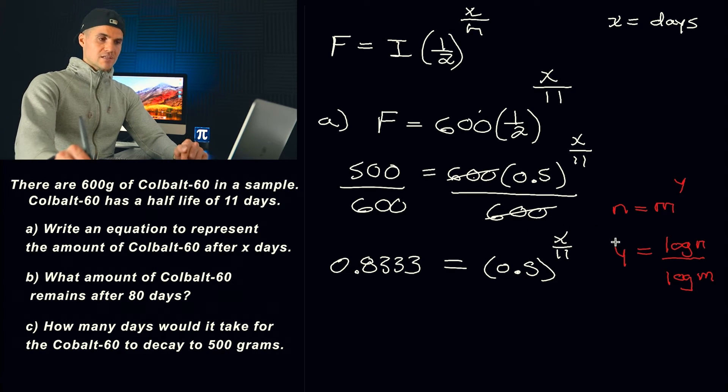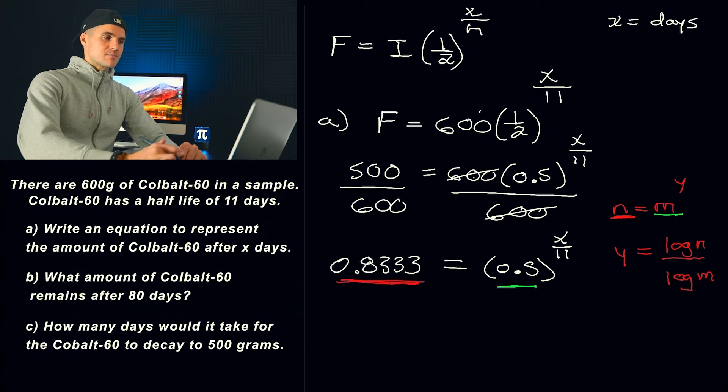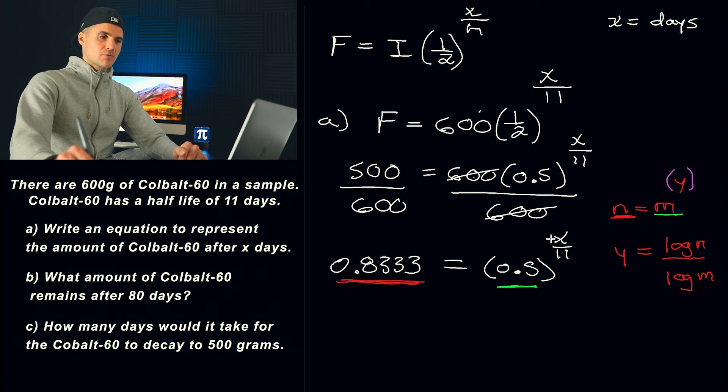Now, in this particular case, if we were to use this, notice that the n is the 0.8333. And then the m, the base, is the 0.5. And then notice the y exponent - this is why I wanted to use a different variable so you're not getting confused here - this whole exponent y is this whole exponent x over 11. So when you use this rule here, you're going to be isolating for that entire exponent.